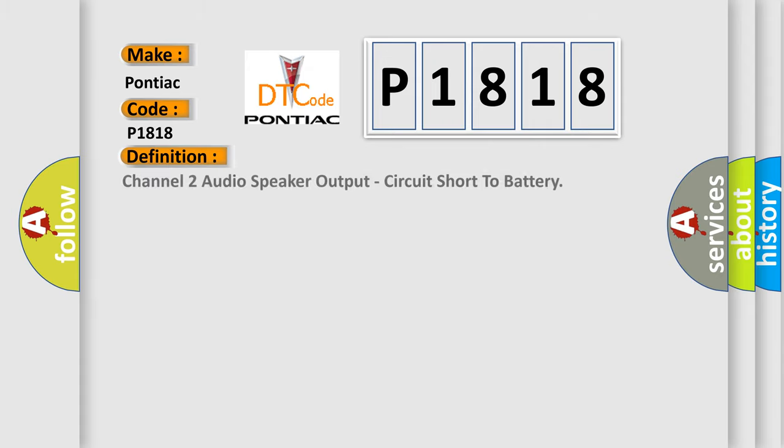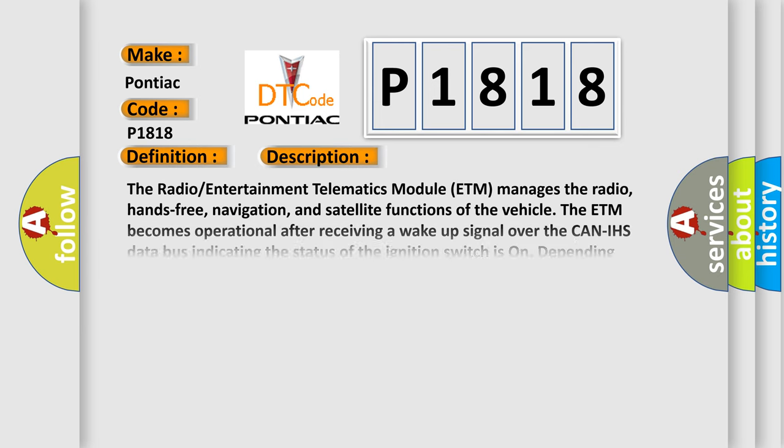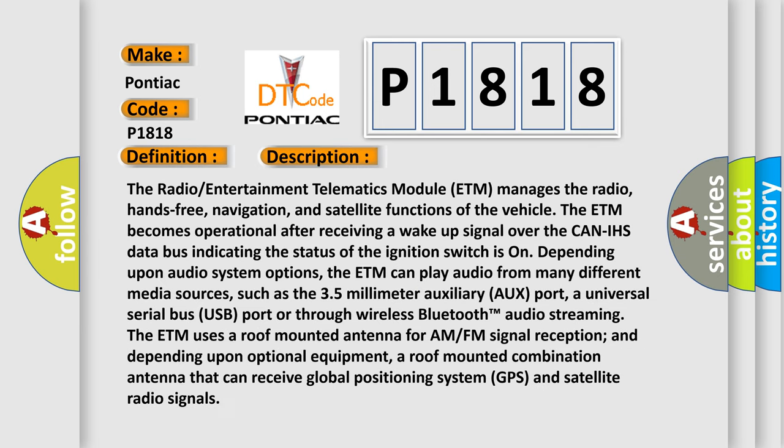The basic definition is: Channel 2 audio speaker output circuit short to battery. The radio entertainment telematics module ETM manages the radio, hands-free, navigation, and satellite functions of the vehicle.